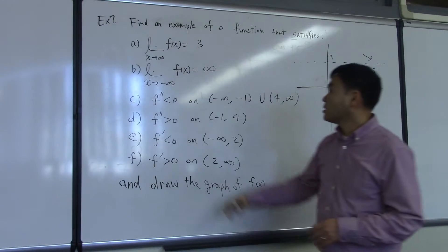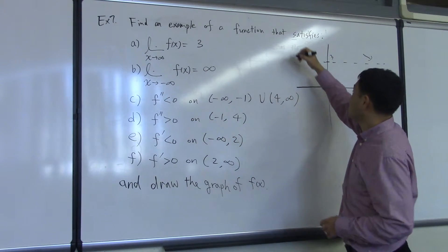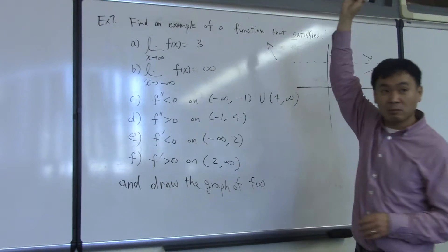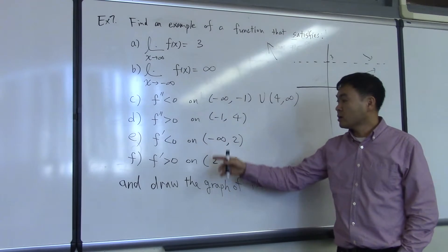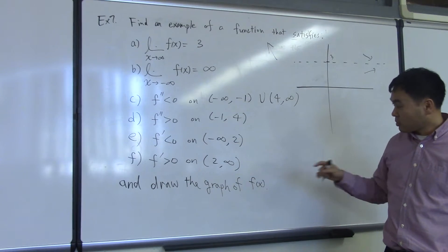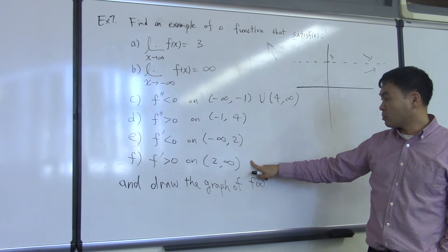And if the limit to negative infinity is infinity, that means the end behavior is going up. Let's just go back to that. I guess the easiest one is to use these two. What does that mean?